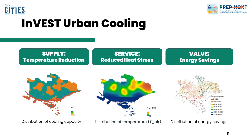The second model is the urban cooling model. Urban heat mitigation is a priority for many cities that have undergone heat waves in recent years. Vegetation can help reduce the urban heat island (UHI) effect by providing shade, modifying thermal properties of the urban fabric, and increasing cooling through evapotranspiration. The outputs from the urban cooling model illustrate that in areas where greater cooling capacity exists, the temperature of that area will be lower and, as a result, the energy savings are likely to be higher.